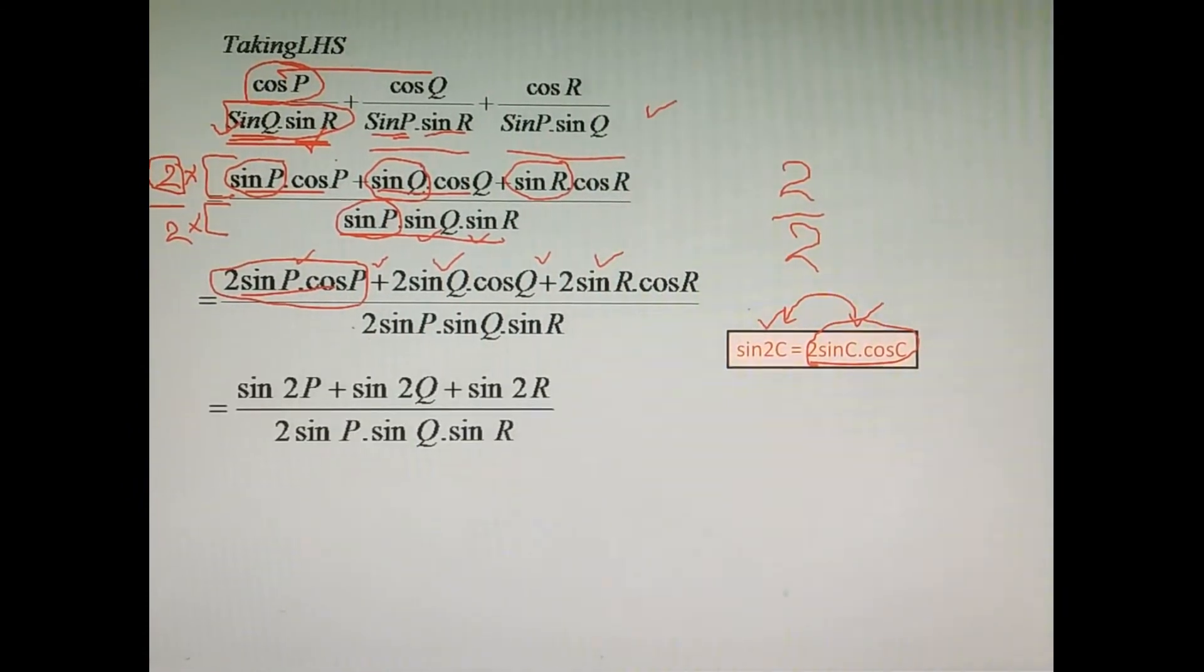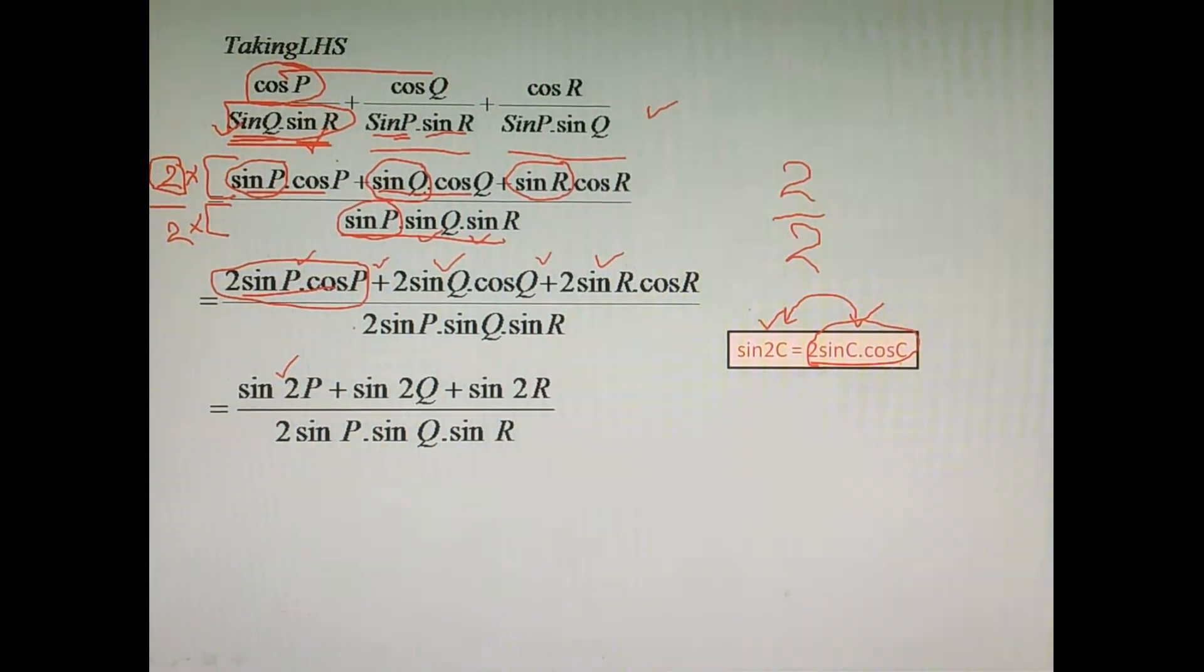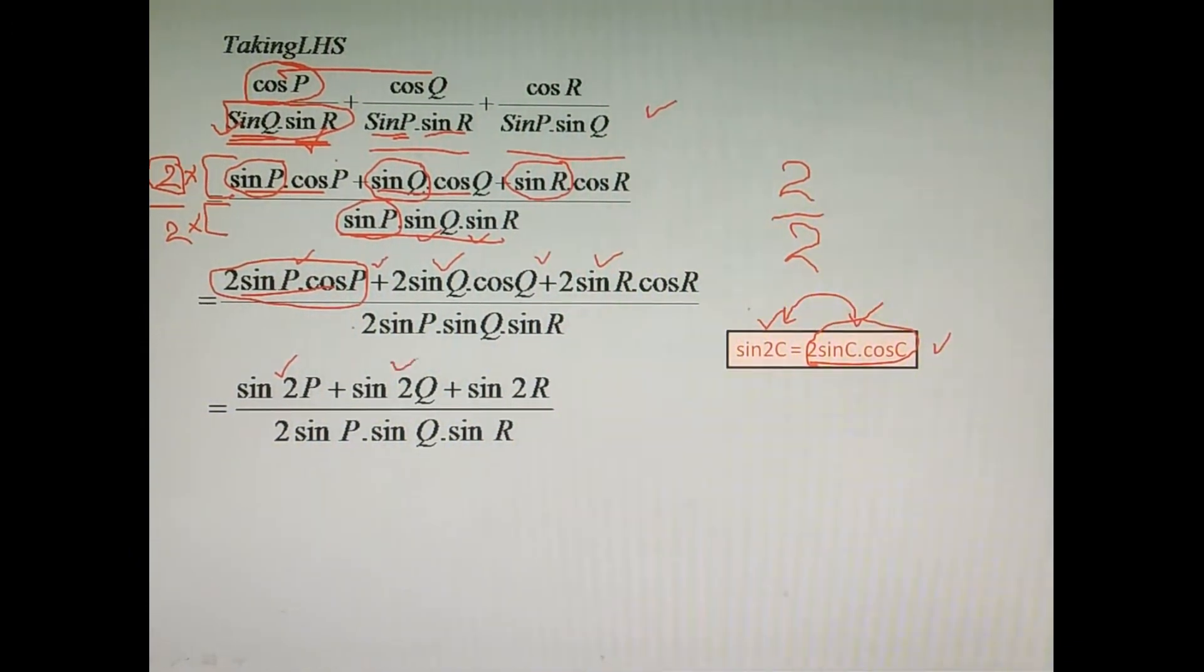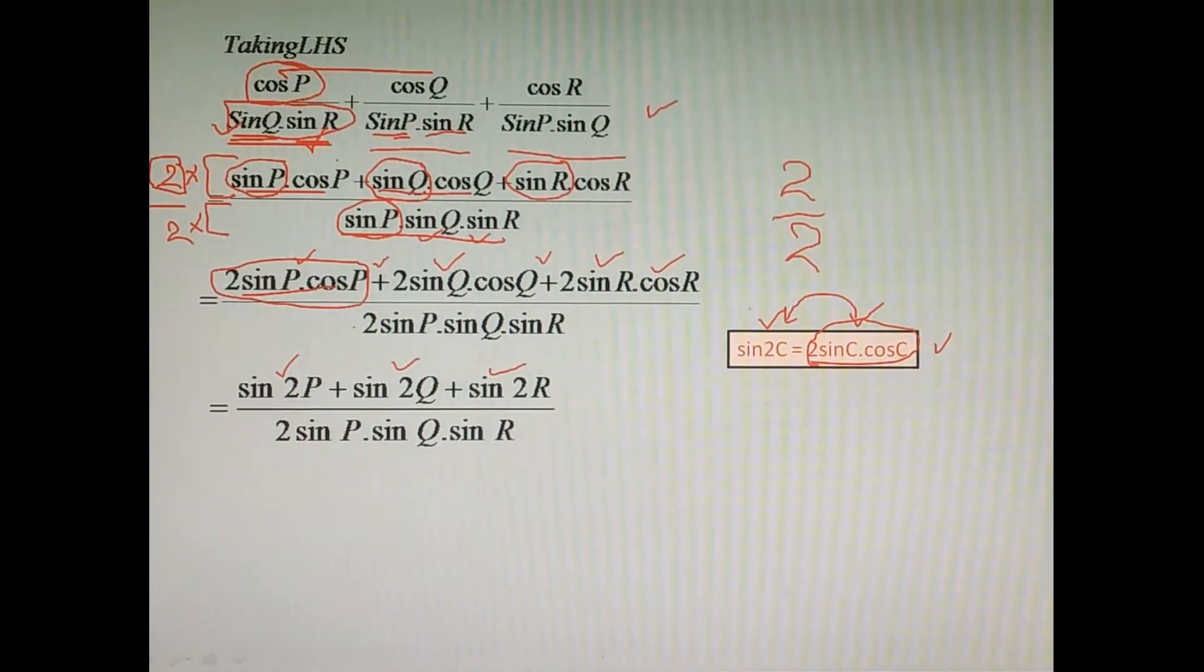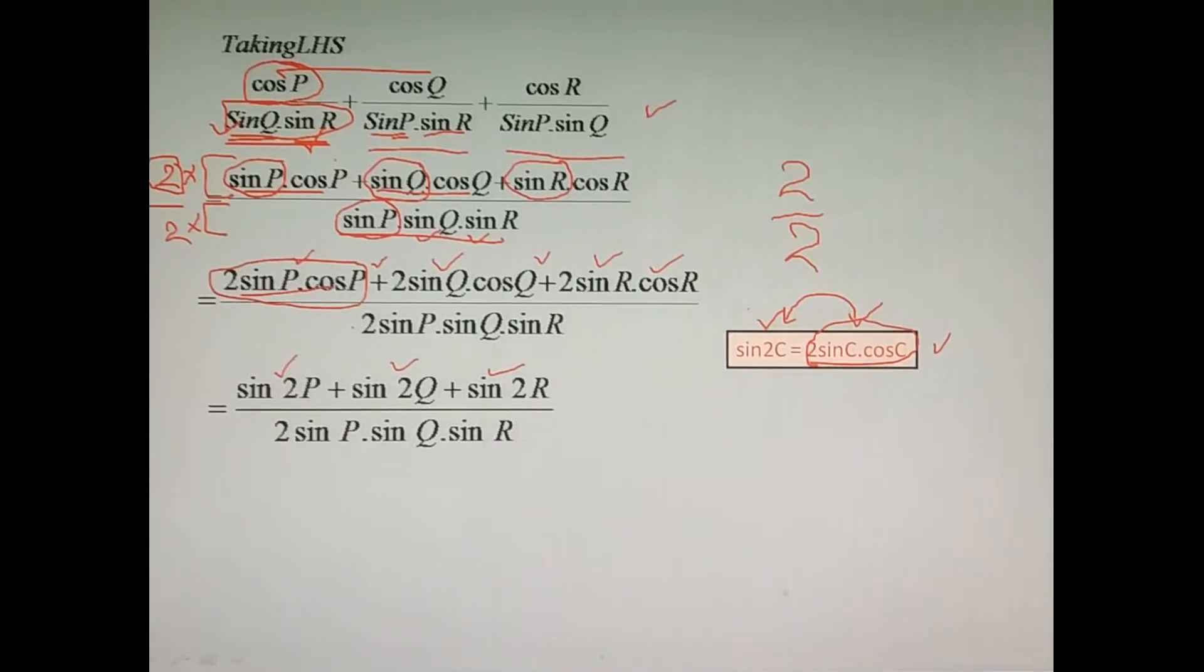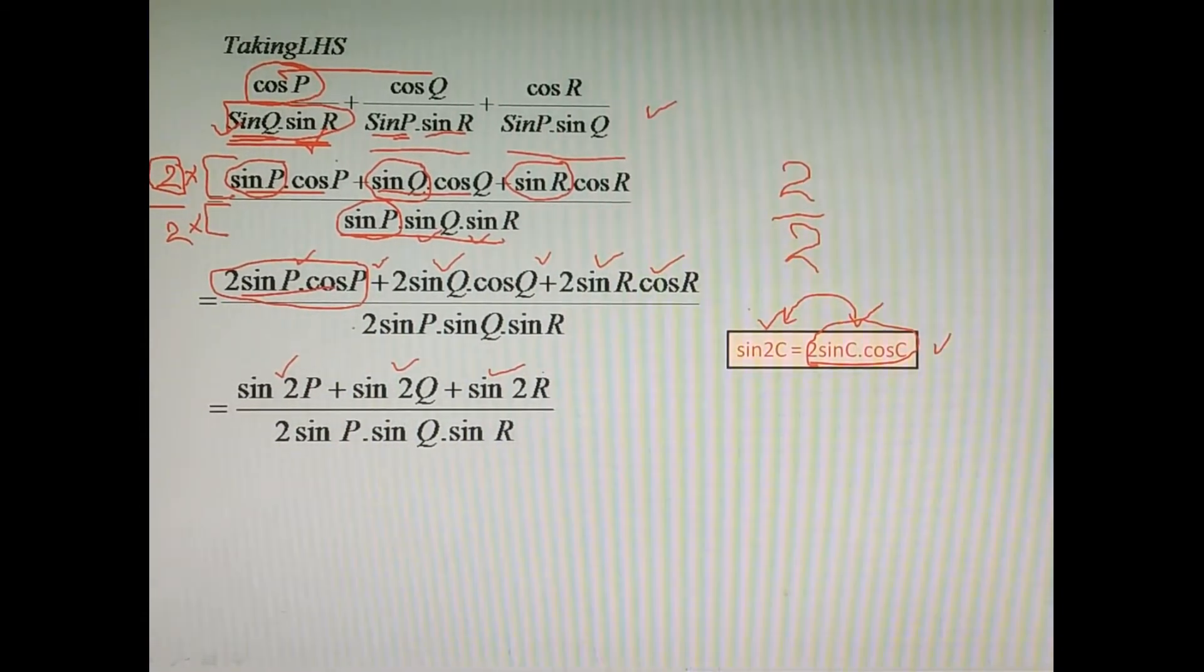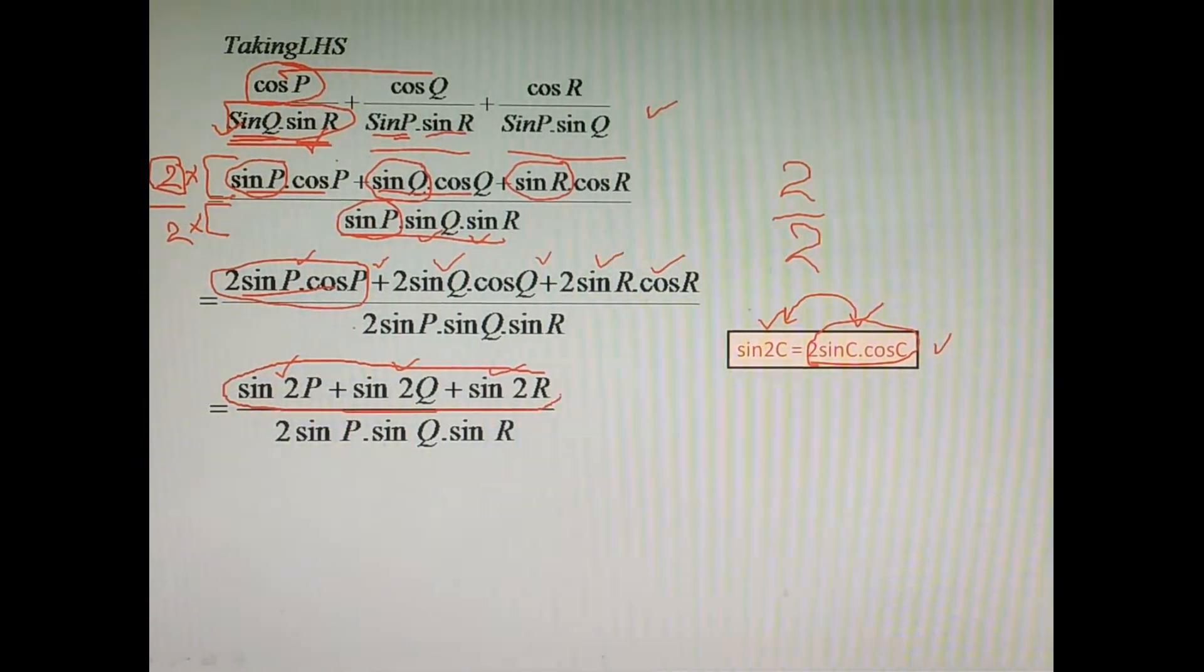So all of these factors like 2 sine P into cos P can be converted into sine 2P. 2 sine Q into cos Q is again in the same form, so that can also be converted into sine 2Q. And in the same way, the third part can also be changed in the same form, that is sin 2R. And the denominator will remain the same here in this step, no need to change.